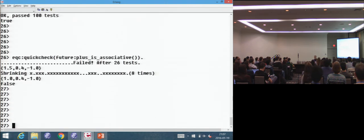Is plus associative. No. It's not. If I take x to be one, y to be 0.4, and z to be minus one, the rounding errors are different on the two sides of the equation. And QuickCheck will just produce the necessary test case for me.